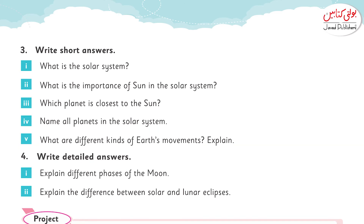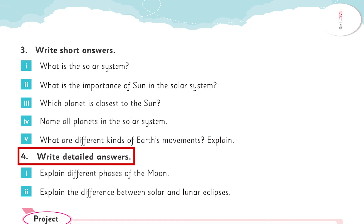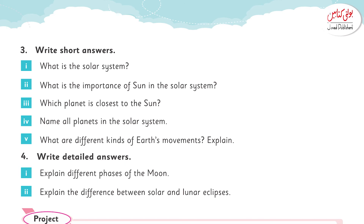What are the different kinds of Earth's movement? Explain. There are two types: revolution and rotation. You can easily find the answer on page number 83 for rotation and page number 85 for revolution. Write a detailed answer — explain the different phases of the moon. You can find the answer on page number 82 and page number 83. Page 82 gives the details and page 83 gives the diagram.